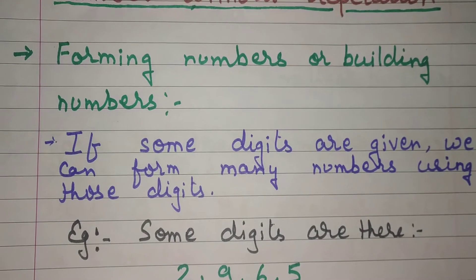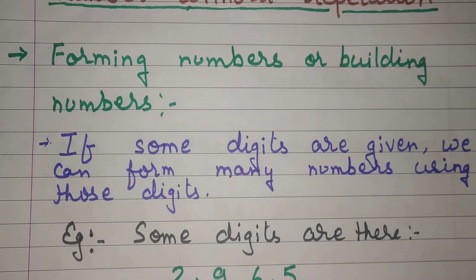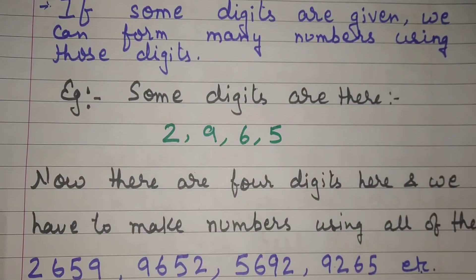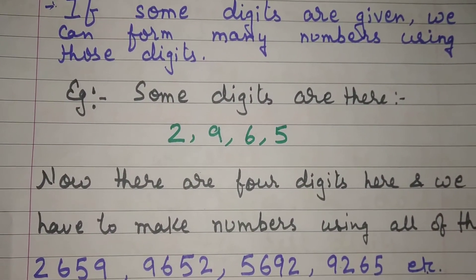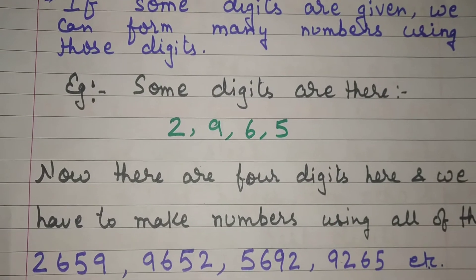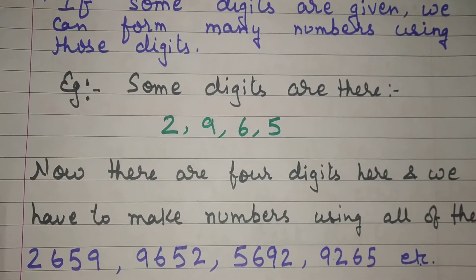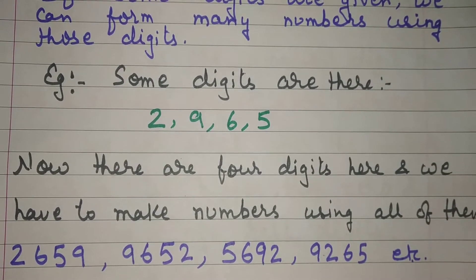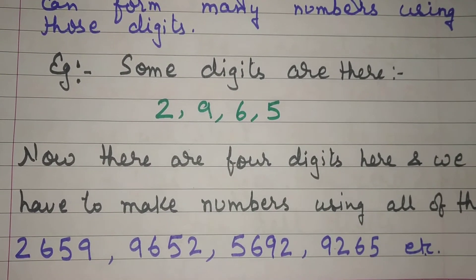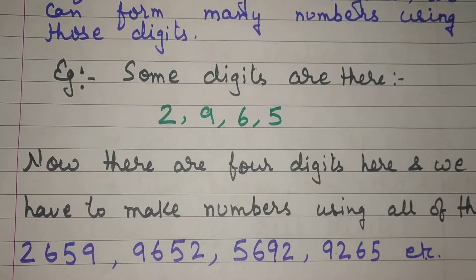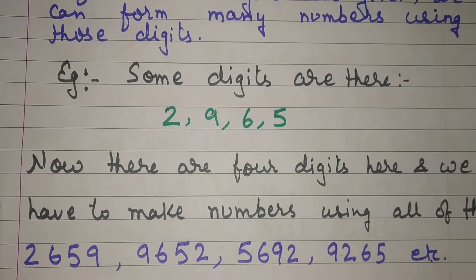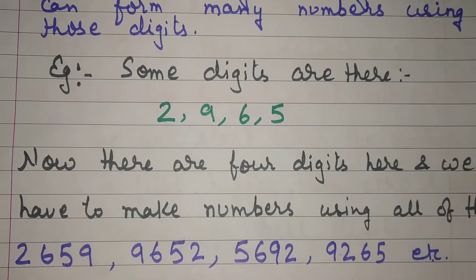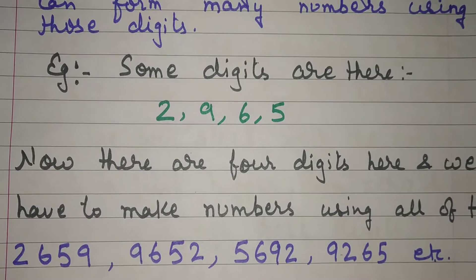If some digits are given, we can form many numbers using those digits. For example, some digits are 2, 9, 6, 5. Now there are 4 digits and we have to make numbers using all of them. So what numbers can we make? 2659, 9652, 5692, 9265, etc.